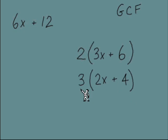Or 3 could work, a 3 out front, and then we'll have 2x plus 4 inside. And then there's the last one, a 6 out in front. Now, the last one is really properly factored.